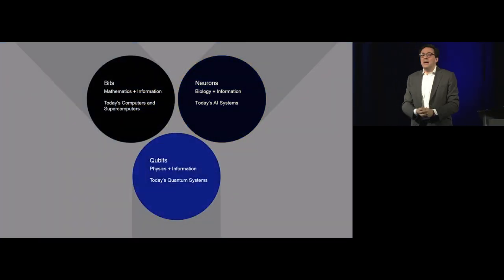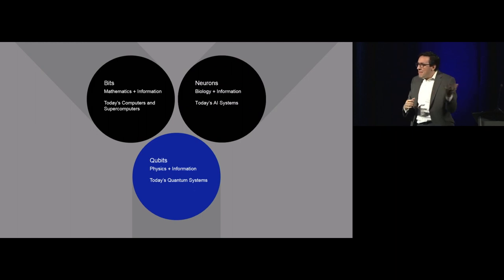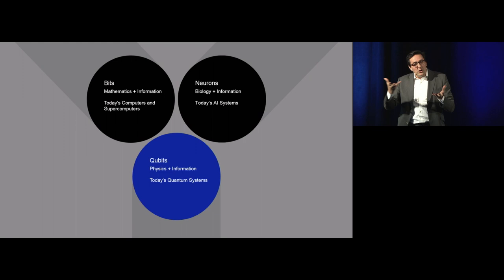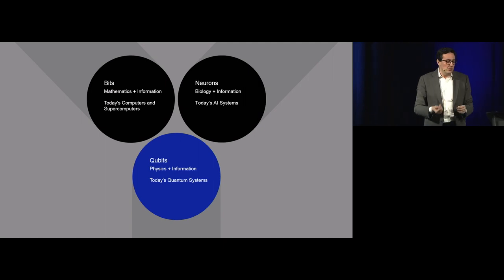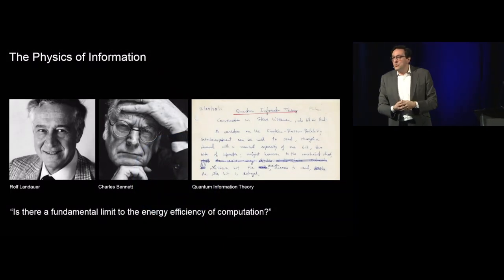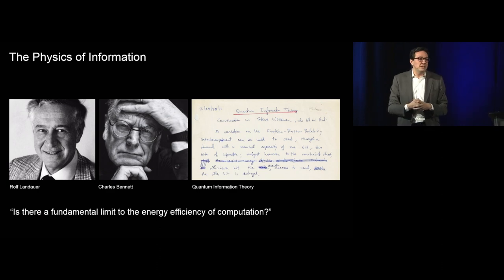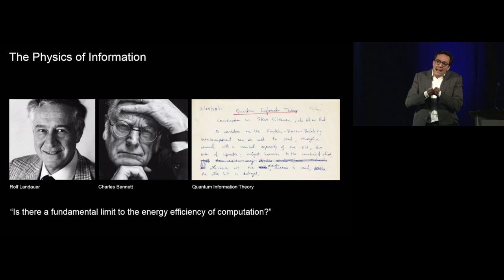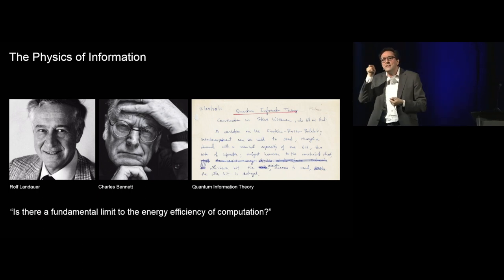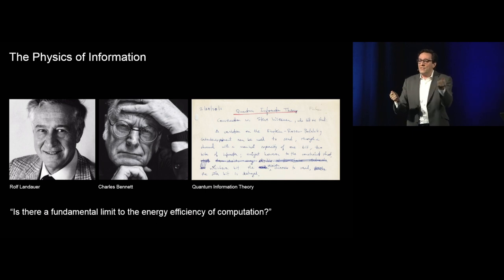I'd like to now bring a third dimension for what is next in computing. If mathematics and information coming together gave us the world of bits, and biology and information gave us the world of neurons, it is physics and information that brings us the world of qubits. For us at IBM Research, the journey of thinking about quantum information dates back to the 1960s and 70s, specifically to Rolf Landauer and Charlie Bennett.